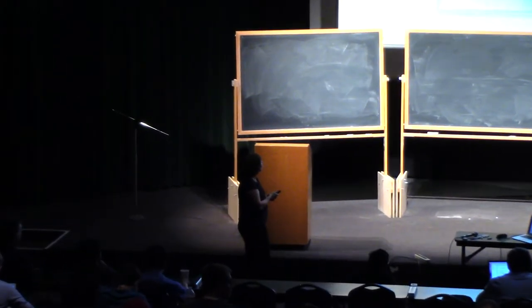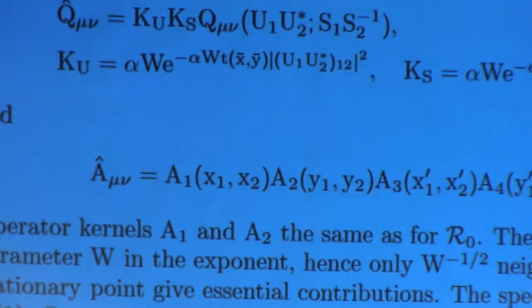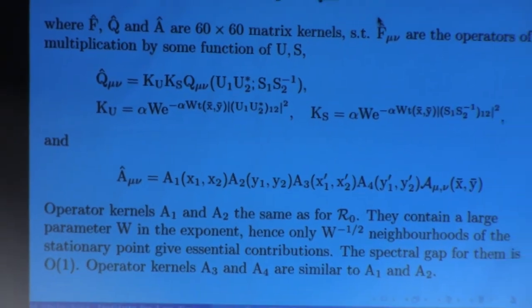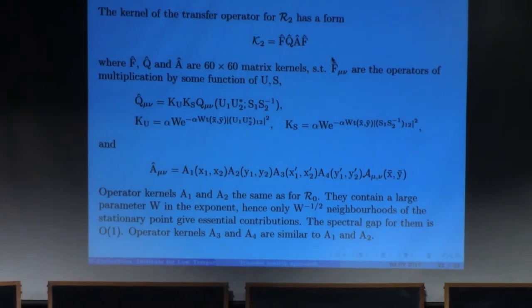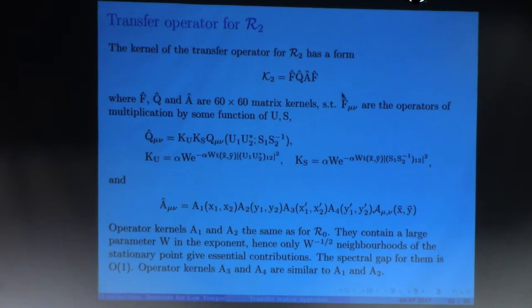But now you have matrices 60 by 60. Here again some multiplication operator, and here the same. Here is the operator which is composed of the matrix which is composed from operator depending from the difference on the unitary and hyperbolic group.